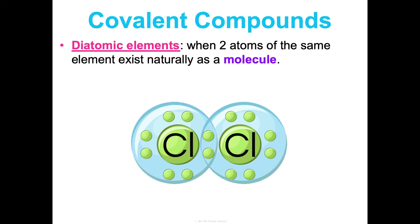A term to know with covalent compounds is diatomic elements. This is when two atoms of the same element exist naturally as a molecule. The ones you'll need to know are hydrogen, nitrogen, oxygen, fluorine, chlorine, bromine, and iodine. They don't exist on their own. When you're inhaling oxygen right now, you're inhaling O2, not just O. Because it's two of the same bonded together, these are always forming non-polar covalent bonds; they're equally sharing those electrons.